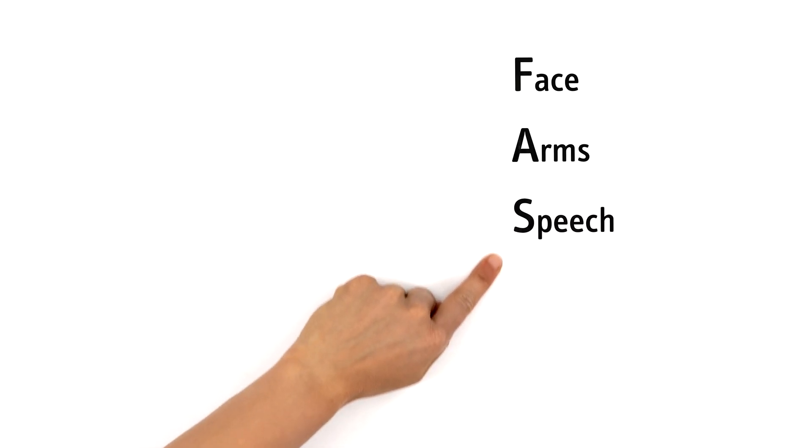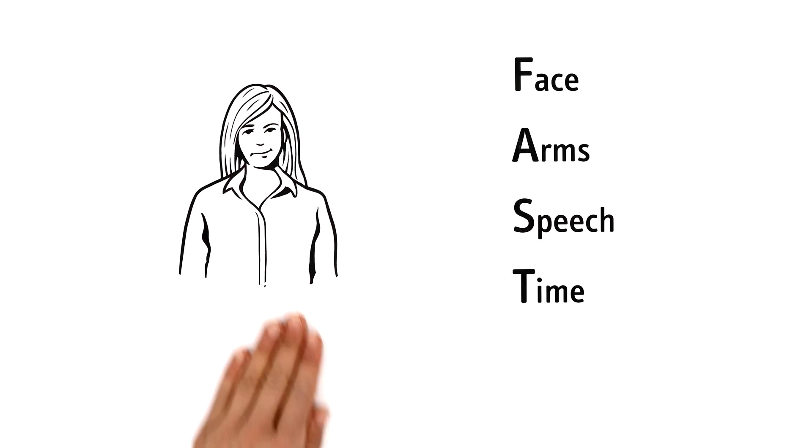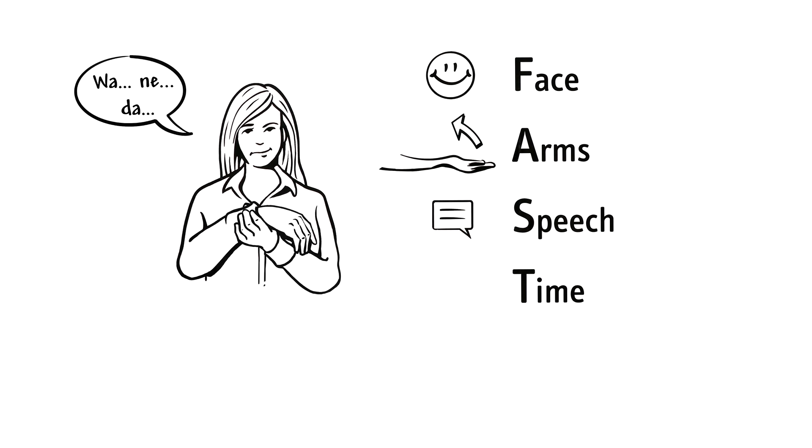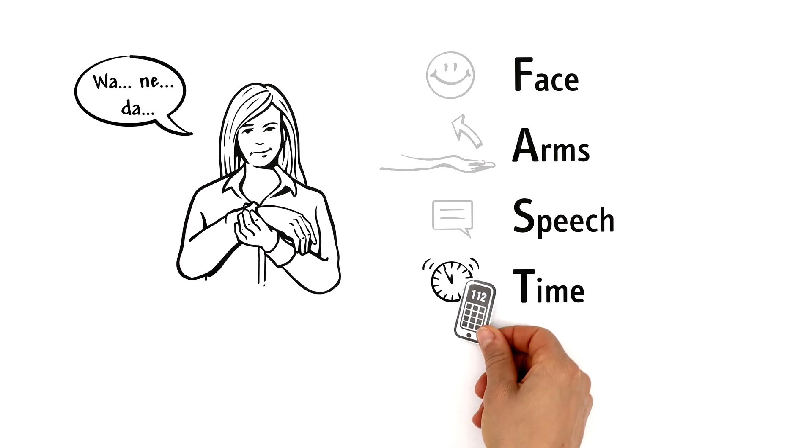That's why the FAST test helps to detect a stroke quickly. In other words, have the affected person's face, arms or speech gone numb or noticeably changed. The test involves asking the person to smile, stretch out their arms with their palms facing up, and say something. If it's a stroke, they will usually not be able to do everything. It's then time to act immediately and call an ambulance.